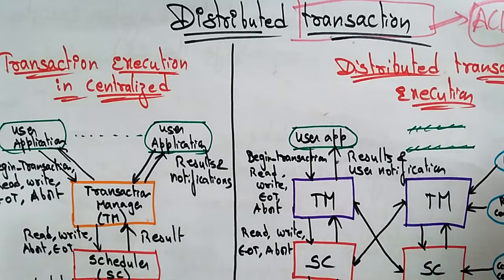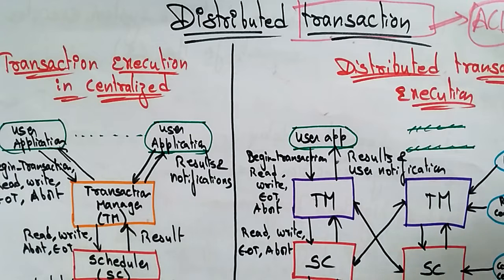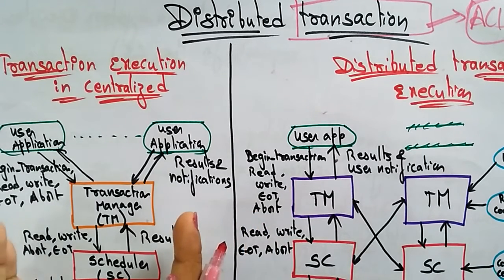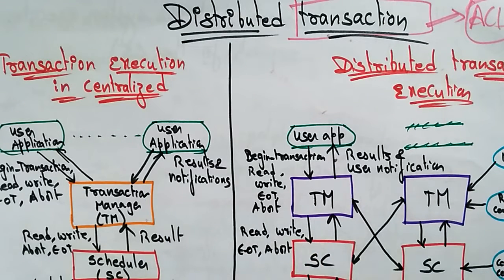Now I want to explain how a transaction takes place in a distributed environment, since we are dealing with distributed systems. Before entering into distributed transactions, I want you to understand the difference between a centralized transaction and a distributed transaction — specifically, the difference in their execution. This diagram shows the transaction execution in both centralized and distributed environments.